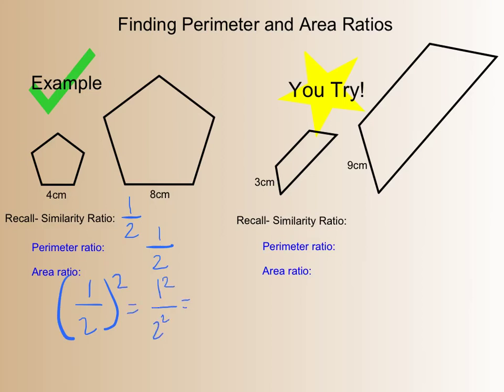So my answer is 1 over 4. My area ratio is 1 fourth. My perimeter ratio is 1 half, because that's the same as my similarity ratio of 1 half. Go ahead and try that next problem.